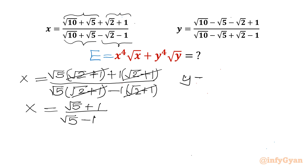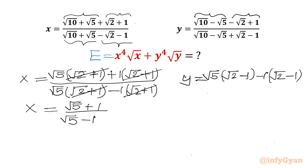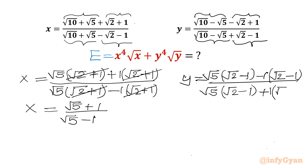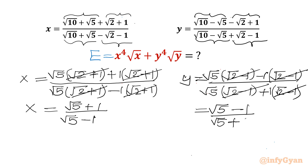Similarly for y: from the first two terms I take √5 common, leaving (√2 - 1) in the bracket. From the last two terms I take -1 common, giving (√2 - 1). Cancelling the common factor (√2 - 1) from numerator and denominator, y simplifies to (√5 - 1) / (√5 + 1).